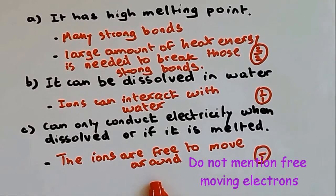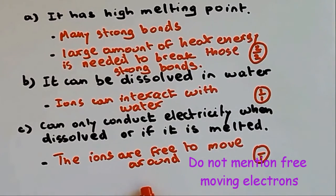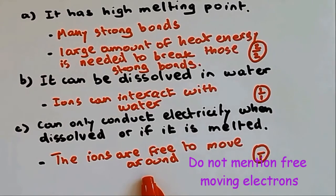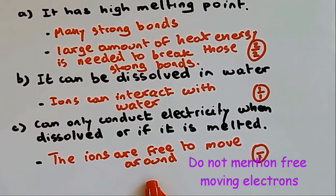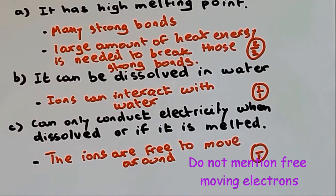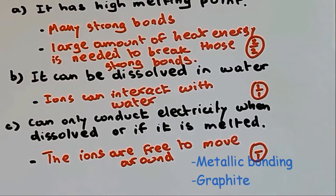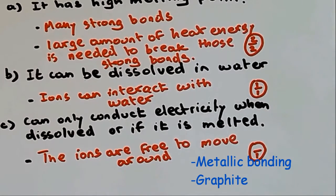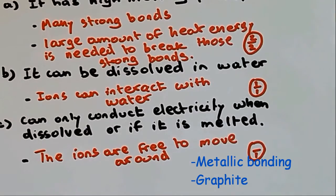You should never mention free-moving electrons, because there are not free-moving electrons when it comes to giant ionic structure. Only mention free-moving electrons when it comes to metallic bonding or graphite, which is a giant covalent structure.